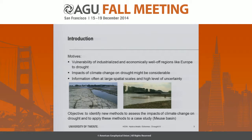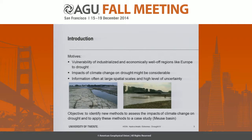At the moment, most of this information is only available at relatively coarse spatial resolutions and with high levels of uncertainty. Some of this uncertainty cannot be reduced because we are talking about the future; some of it might be reduced by using other methods. So the idea of this study was to identify new methods to assess the impacts of climate change on drought and apply these methods to a case study.